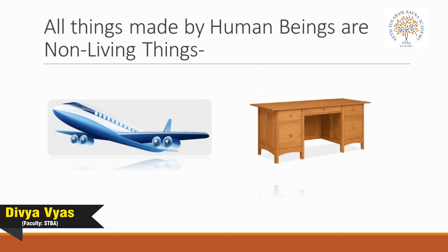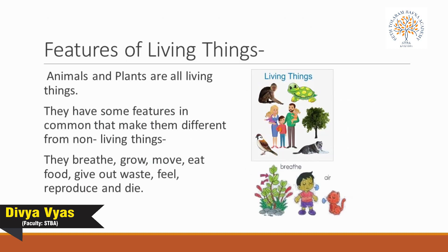All things made by human beings are non-living things. Now we will discuss the features of living things. Animals and plants are living things and they have some features in common that make them different from non-living things. They breathe, grow, move, eat food, give out waste, feel, reproduce, and die.